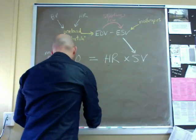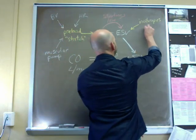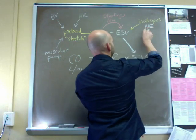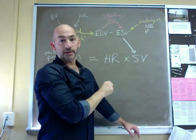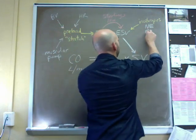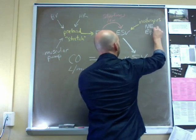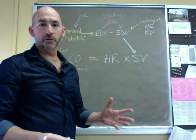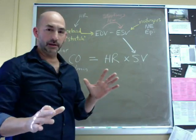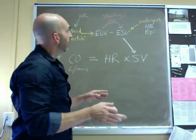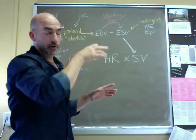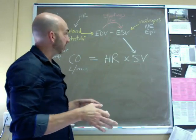And our inotropes include norepinephrine, neurotransmitter norepinephrine, epinephrine, which is hormonal from the adrenal medulla, both sympathetic mediators. We could probably throw in the thyroid hormones there. They tend to be positive inotropes as well.